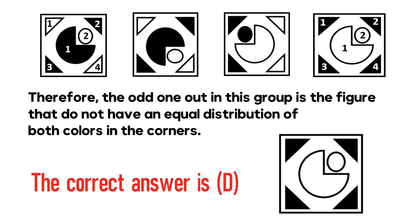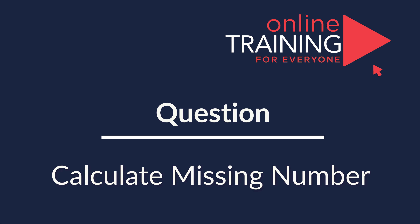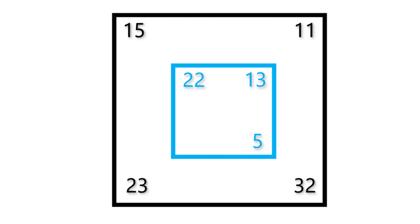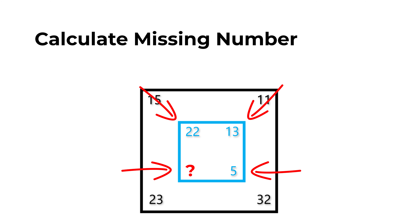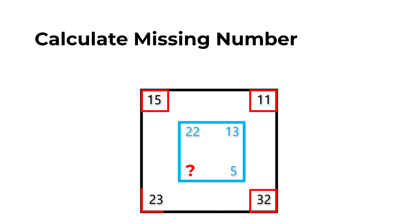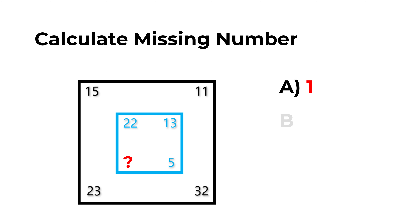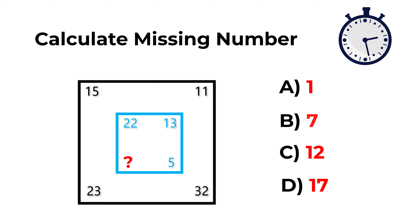This is a very interesting question which requires you to do calculations based on a detected pattern. You are presented with two squares: a small square located inside a larger square. There are numbers in all corners of both squares. Going clockwise from the upper-left corner of the larger square you see: 15, 11, 32, and 23. In the smaller square the numbers are 22, 13, 5, and one missing number. Choices are: A — 1, B — 7, C — 12, D — 17.